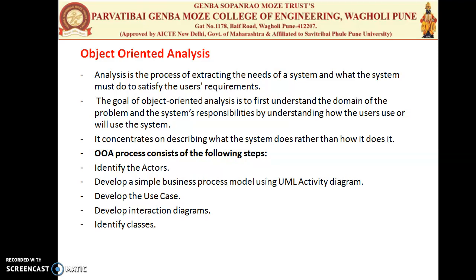Object-oriented analysis is the process of extracting the needs of a system and what analysis must do to satisfy the user requirements. The goal of OOA is to understand the domain problem and system responsibilities by understanding how the user will use the system. It describes what the system does rather than how it does it. OOA consists of different steps: identify the actor, develop a simple business process model using the UML activity diagram, develop a use case, develop an interaction diagram, and identify the classes.